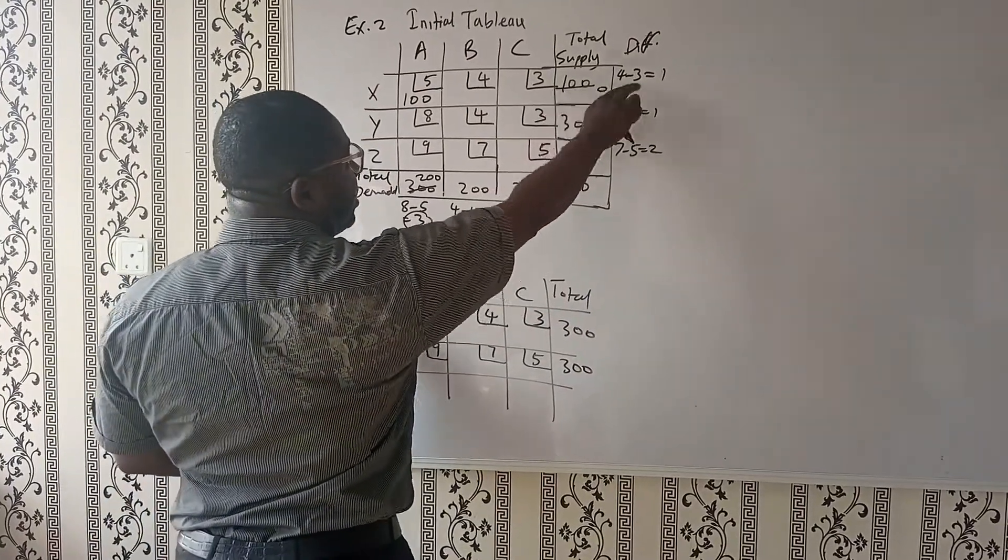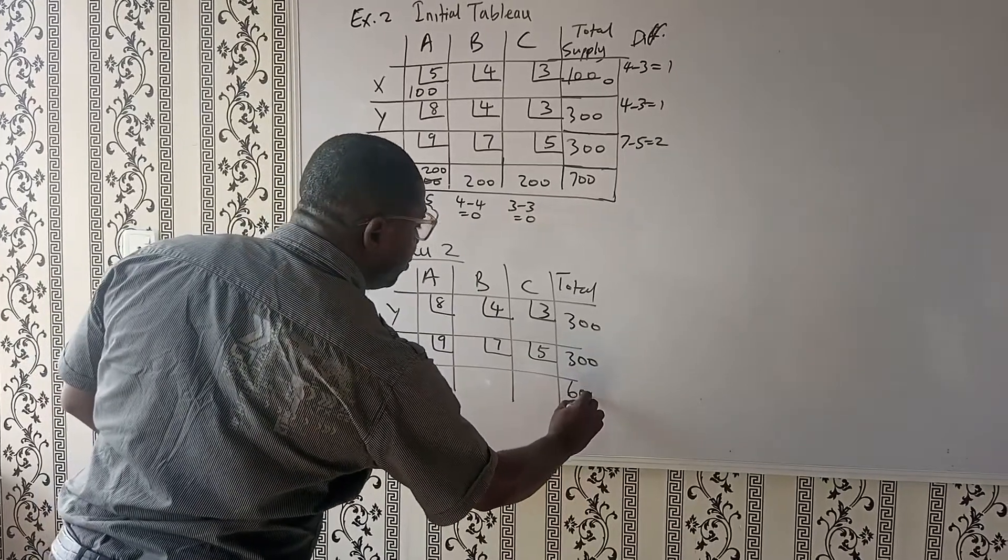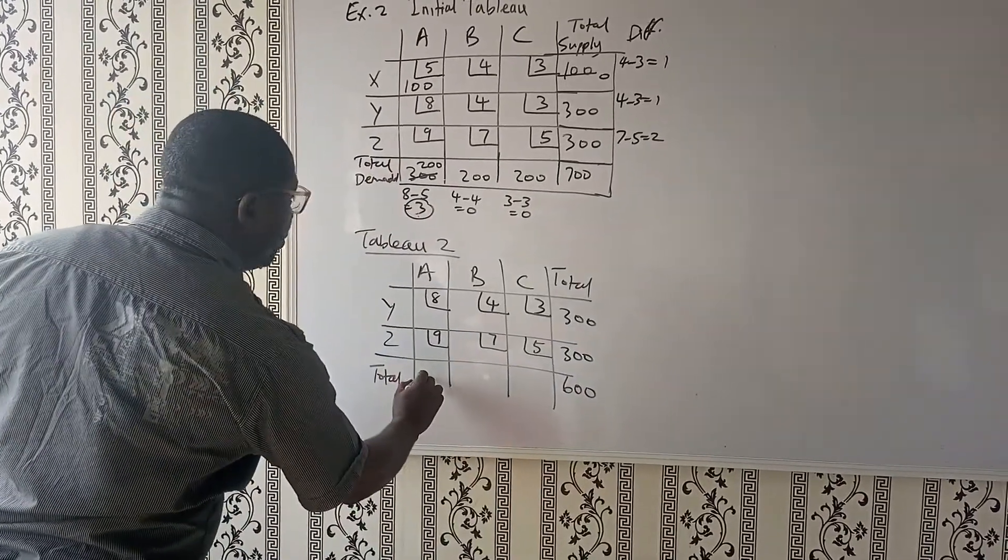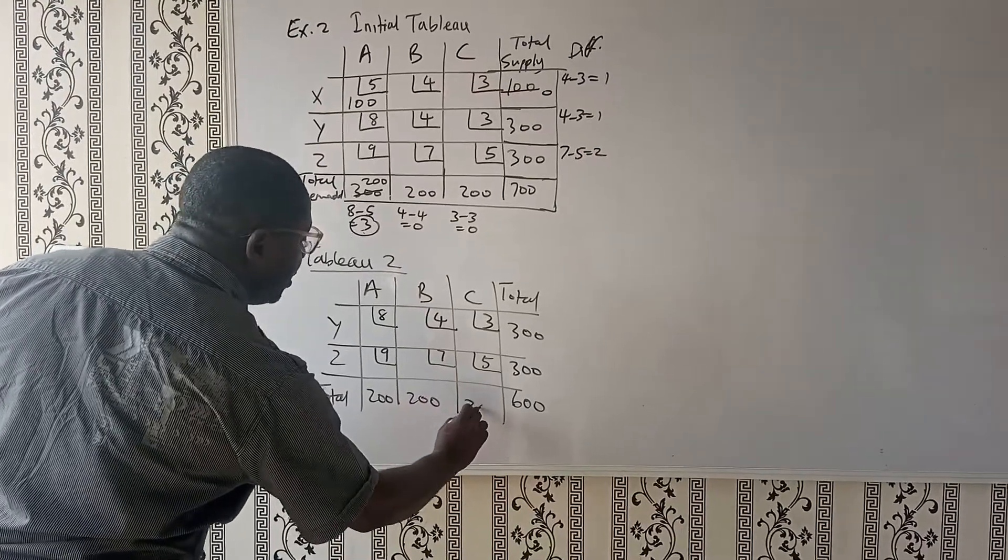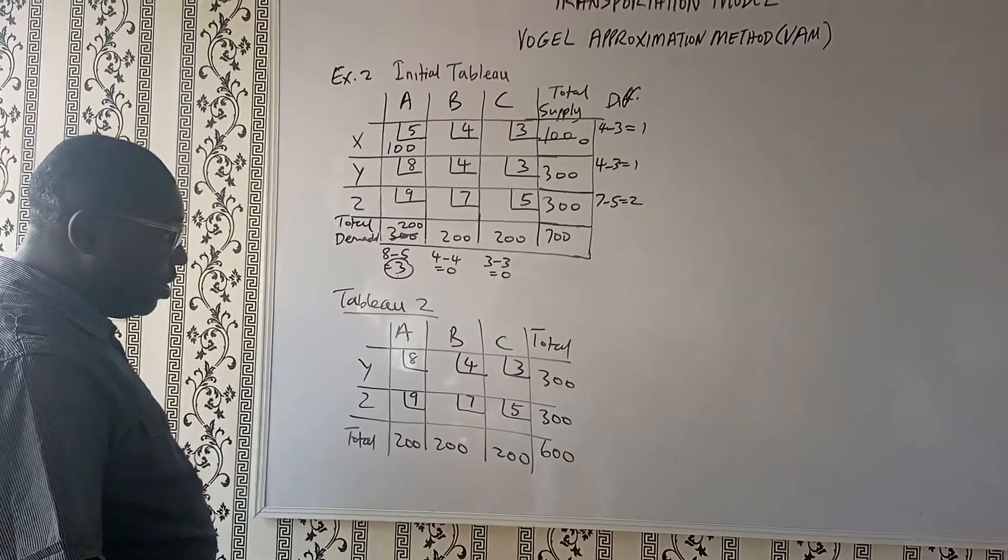Remember, we have eliminated 100 here, so we are left with this. So this becomes 600 and this will be 200, 200, and 200. Are you following? Thank you. I know you are following.